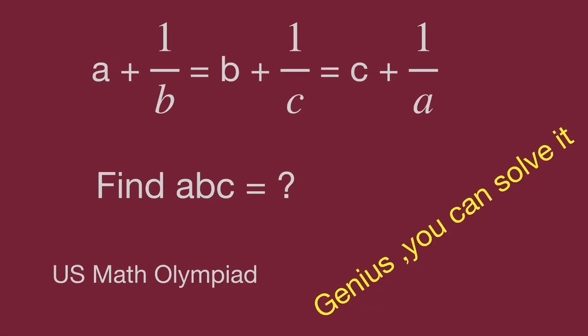Hello, you are watching Balahippo math genius reader. The questions come from the American Math Olympiad. There are three equations: A plus 1 over B equals B plus 1 over C equals C plus 1 over A. Find the value of A times B times C. Can you find the result? Pause the video and find the answer when you are ready. Keep watching the video to find the interesting result.